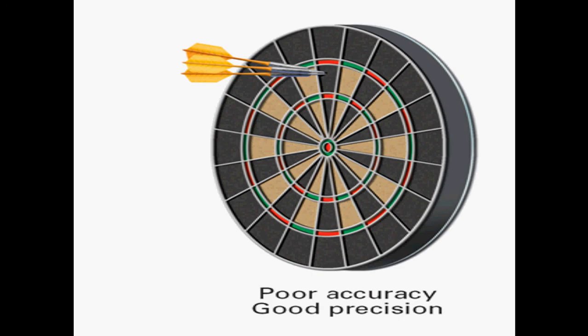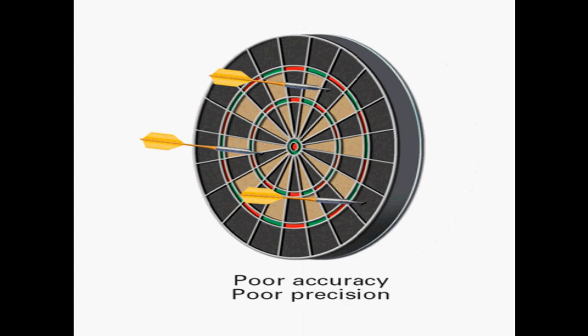In this example, we have poor accuracy and good precision. And in this one, we have poor accuracy as well as poor precision because your darts aren't together. They're not precise.